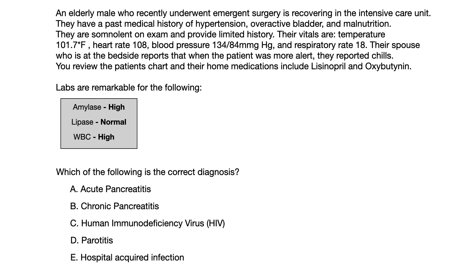An elderly male who recently underwent emergent surgery is recovering in the intensive care unit. He has a past medical history of hypertension, overactive bladder, and malnutrition. He is somnolent on exam and provides limited history. Vitals are temp 101.7, heart rate 108, blood pressure 134/84, and respiratory rate 18. His spouse, at the bedside, reports that when the patient was more alert, he reported chills. You review the chart and his home medications include lisinopril and oxybutynin.